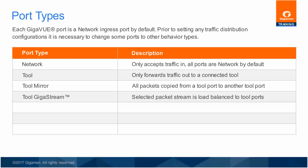Tool Gigastream configurations are used to avoid oversubscribing the processing ability of a single tool, or to divide volumes of traffic larger than the output capacity of a single port. Stack links are used to carry traffic from network ports on one node to tool ports on a destination node.